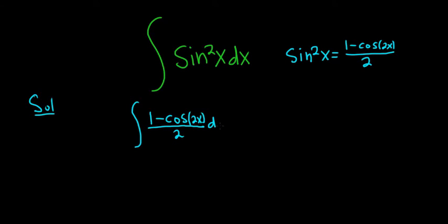The next step is to break it up. We can write this as 1 divided by 2, so it'll be 1 over 2 dx, minus cosine 2x divided by 2, so cosine 2x divided by 2, and then dx.